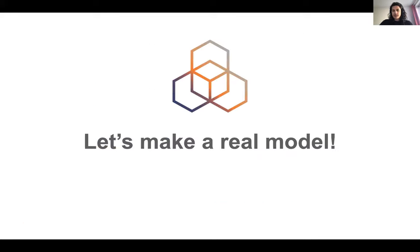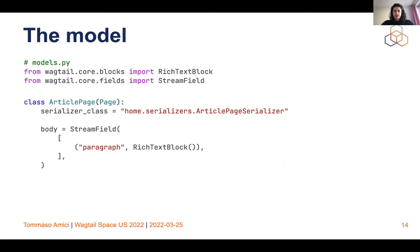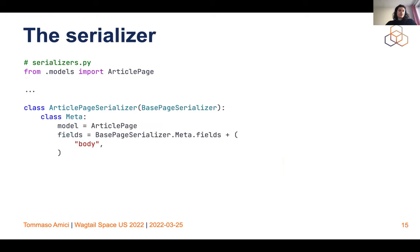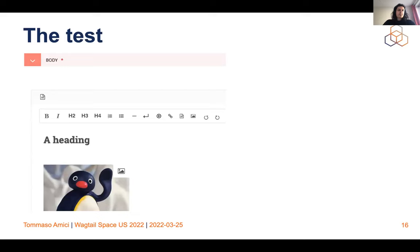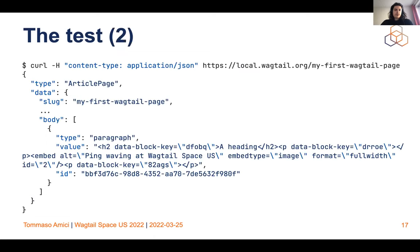So with all that said, let's make a real example model. That's going to be an article page with all the defaults from page and a rich text block in a stream field. Of course you can expand that, and we will do that later. Our serializer is very simple — it extends the base page serializer and just adds body to the fields. Here's our example: it's got a heading, it's got a picture, nothing more. And if we send a request, it looks all right. We have our type article page, we have data, it all looks good.